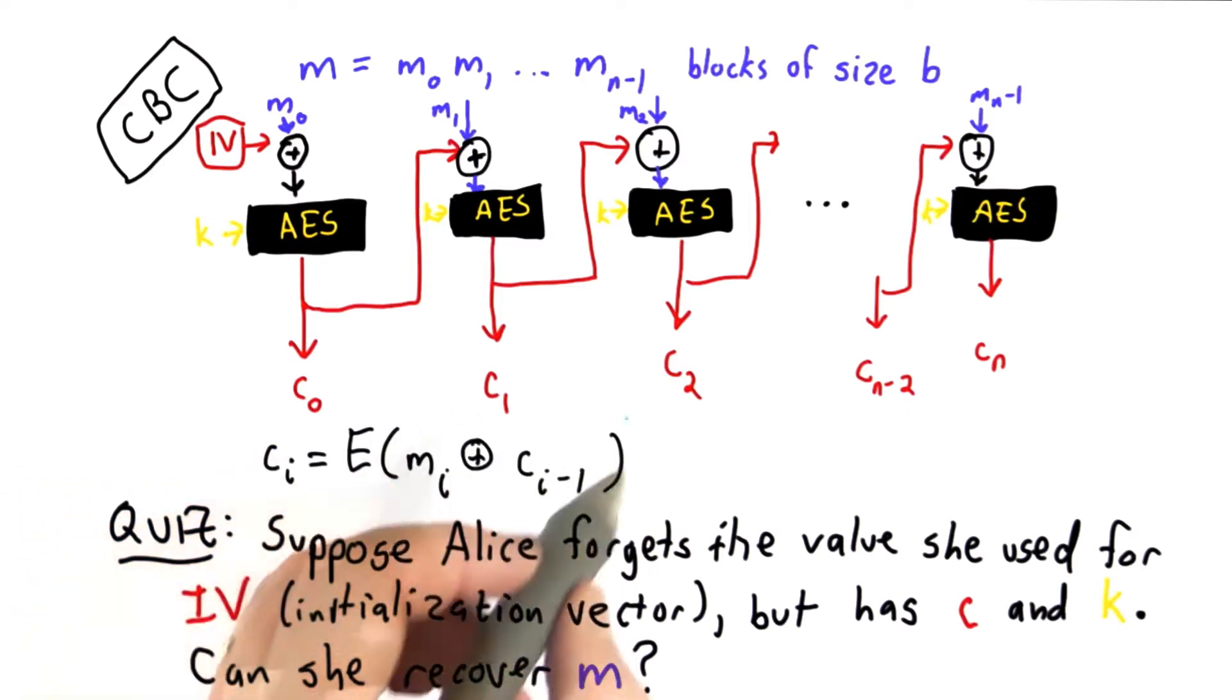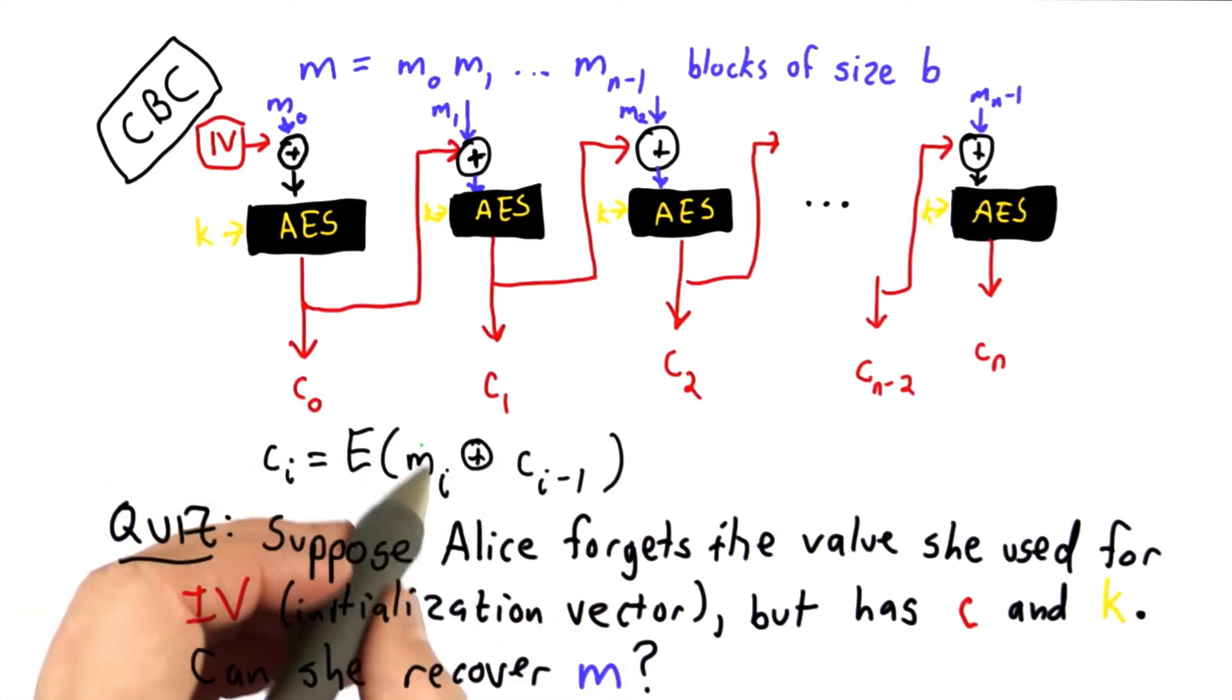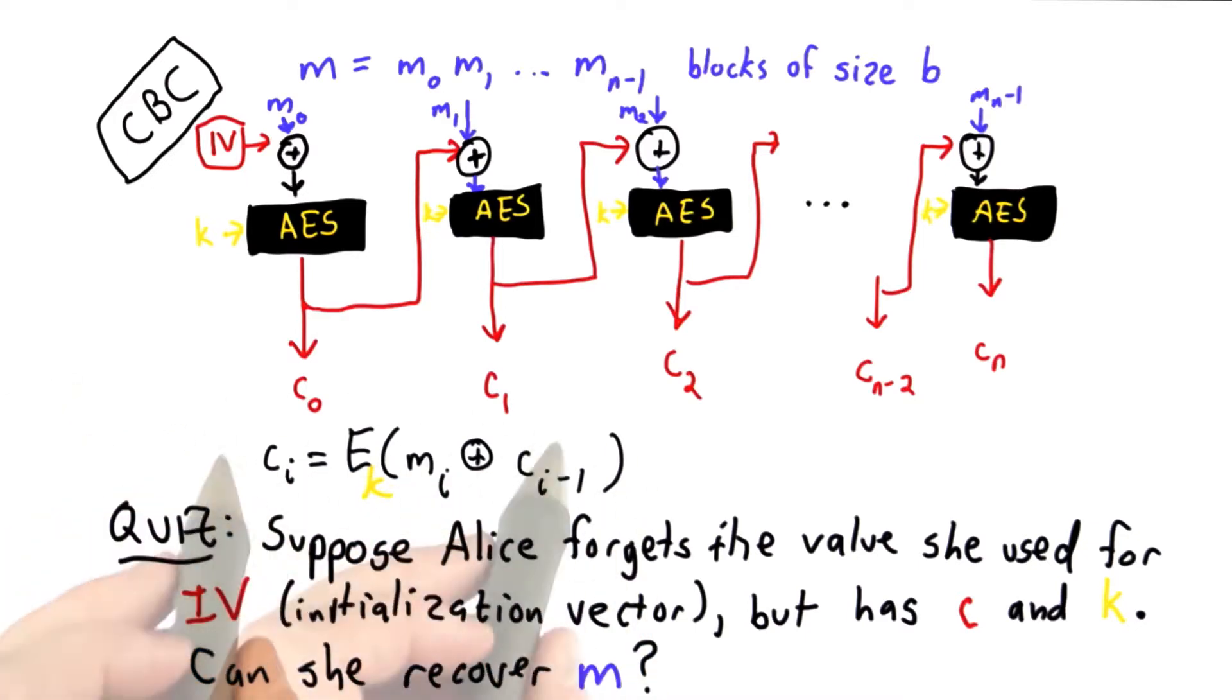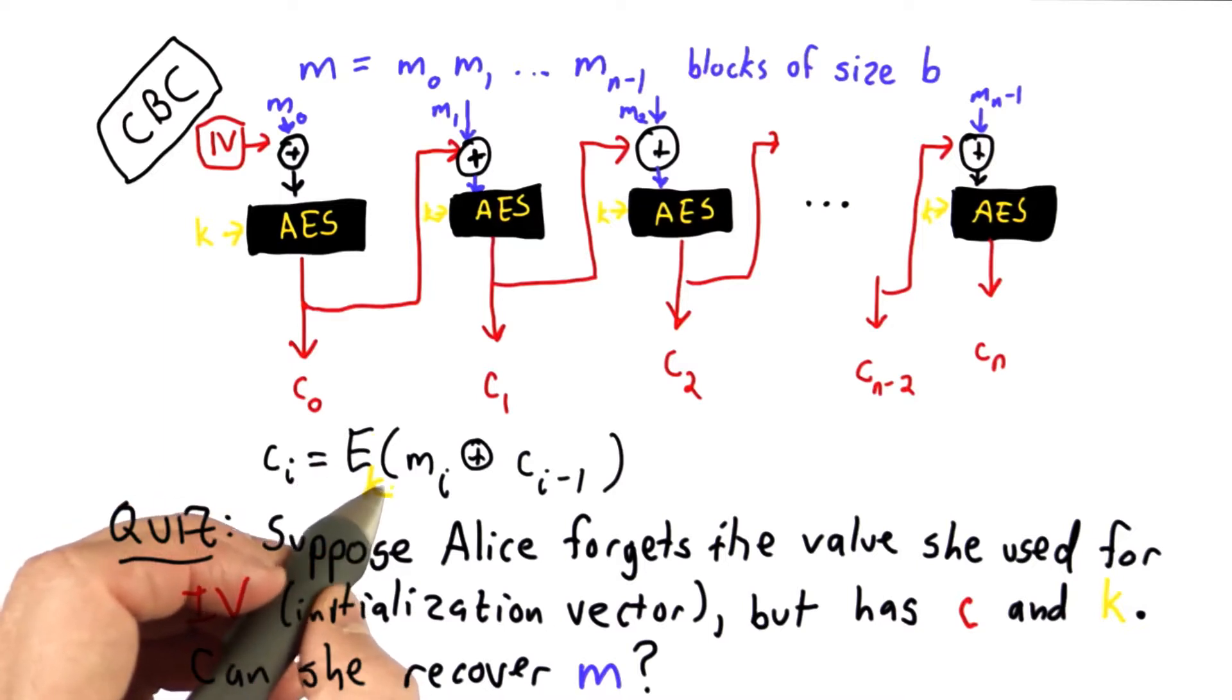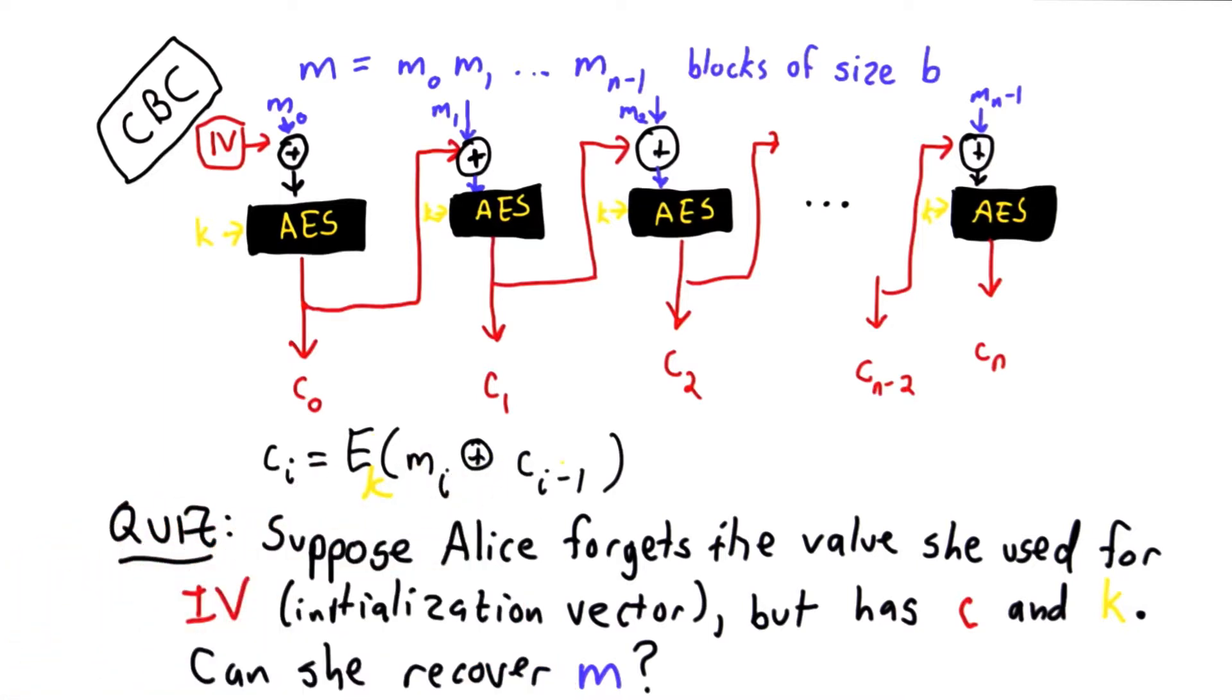the value of ci is the encryption of the value mi. And we saw for the way the encryption mode works, ci is equal to the encryption using the key k of mi XOR ci-1.